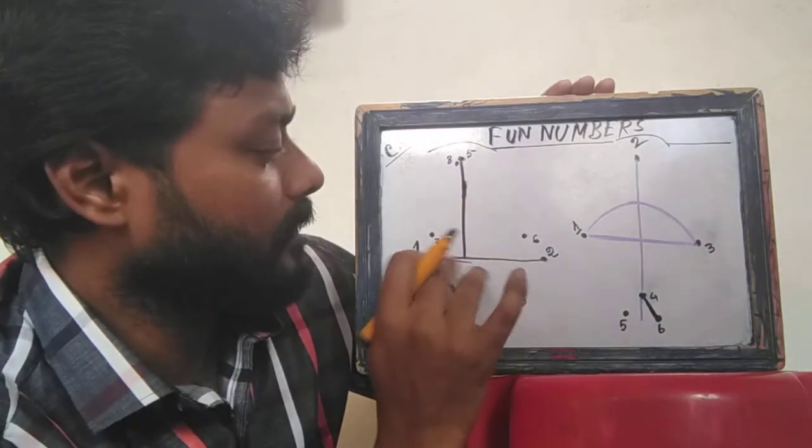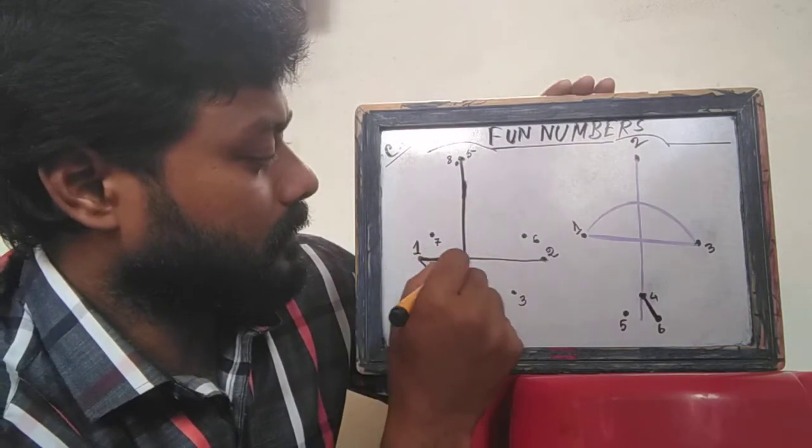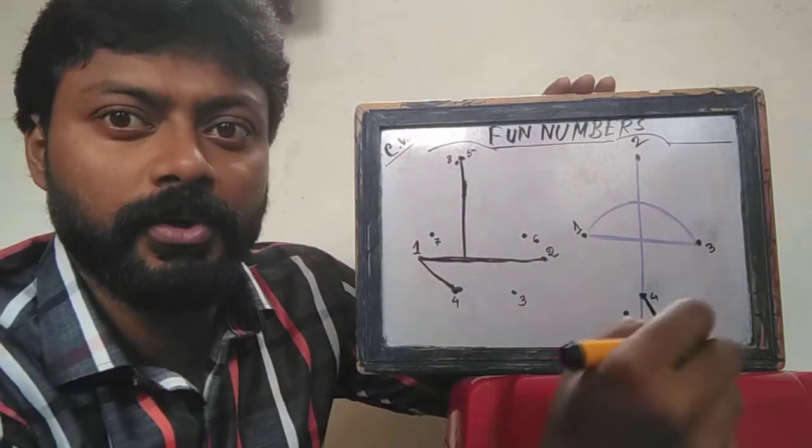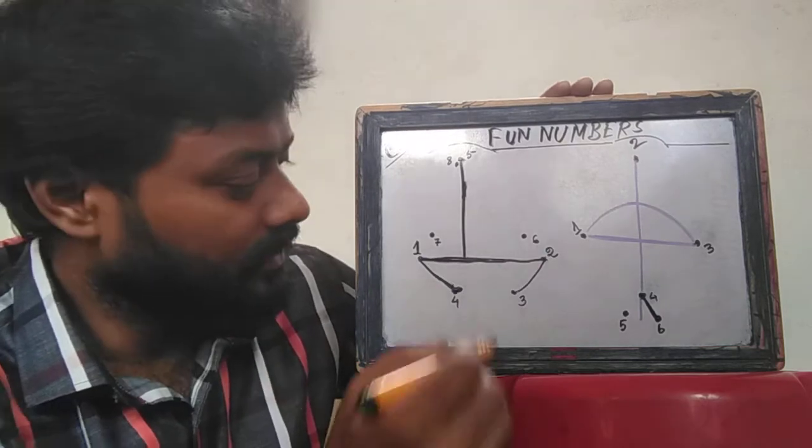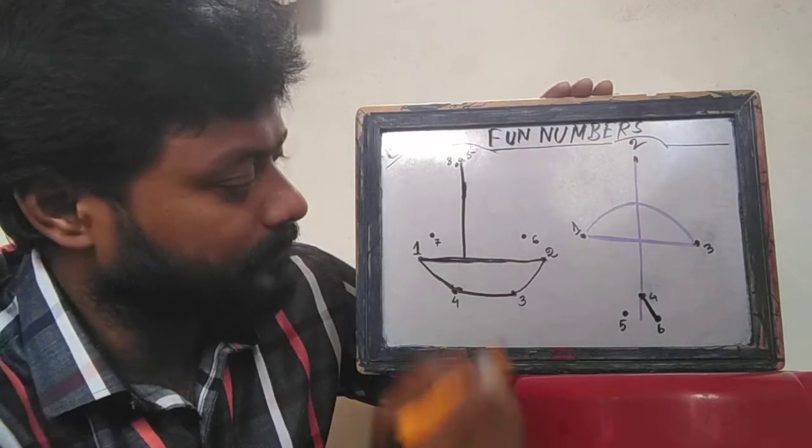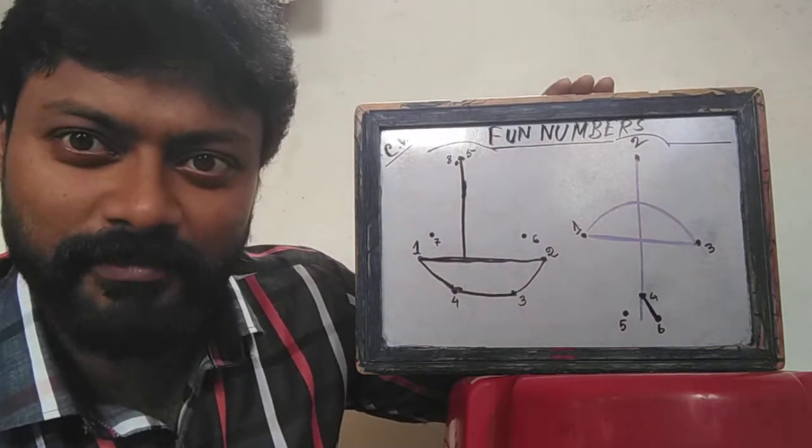See? Draw a line between 1 to 2. Then 2 to 3. Then 3 to 4. Wow! There is a boat.